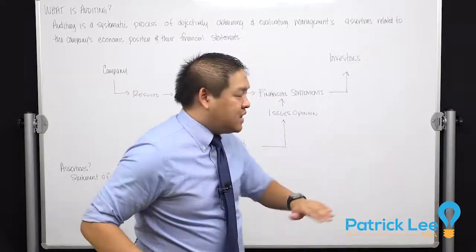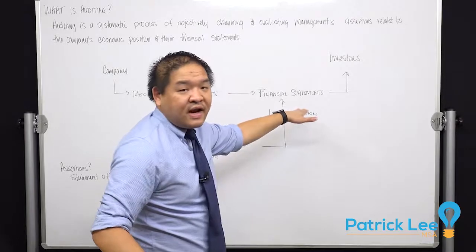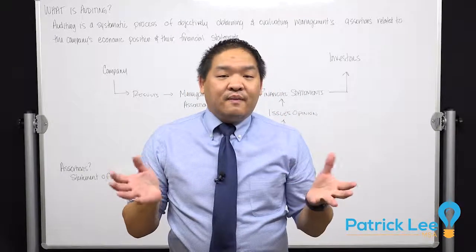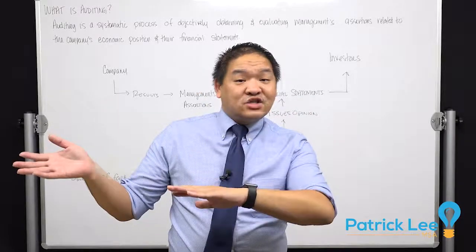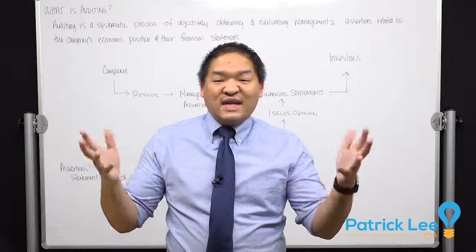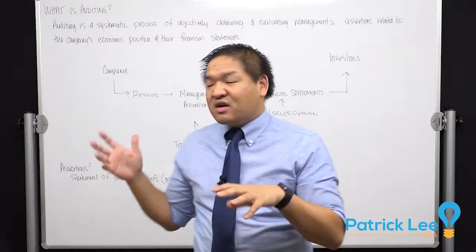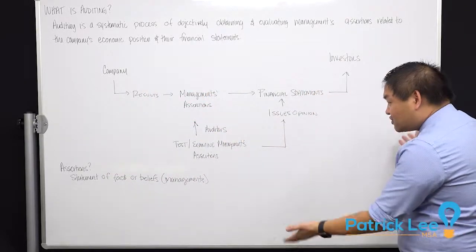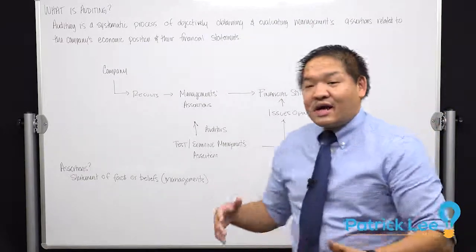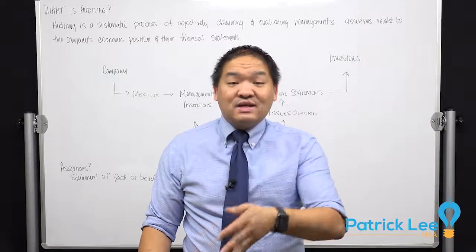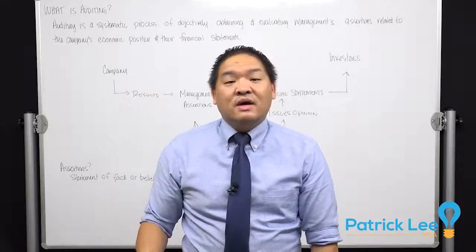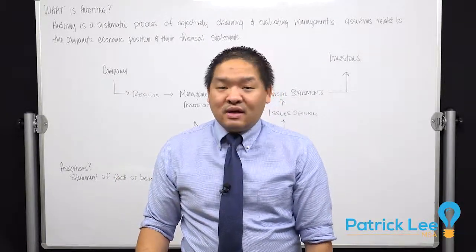So that's what we're doing in auditing — we evaluate management's assertions and then prepare an opinion that goes with the financial statements to the investors. That last chart is probably something you should write down. This is a better and deeper explanation than the last lesson — I wanted to spend a little more time helping you understand what auditing is.